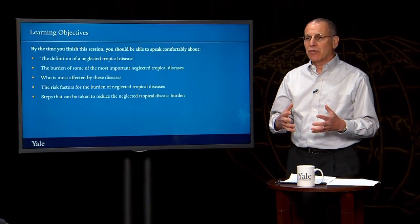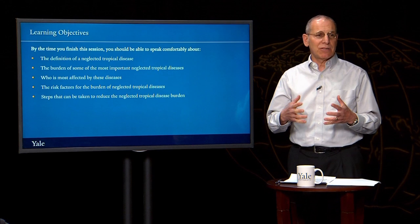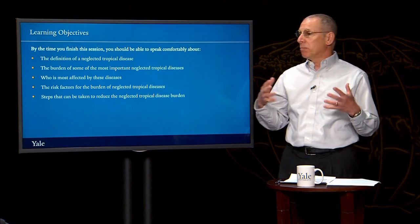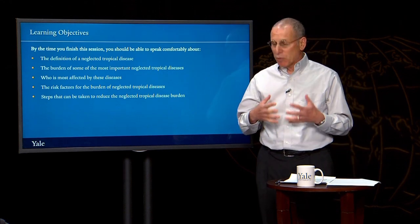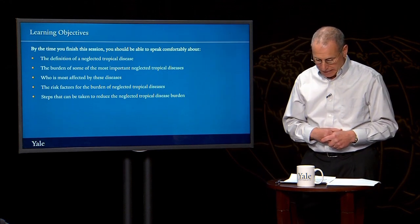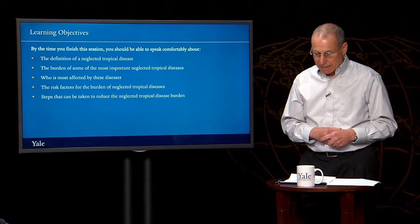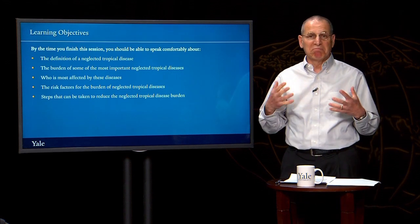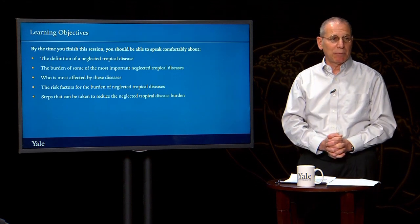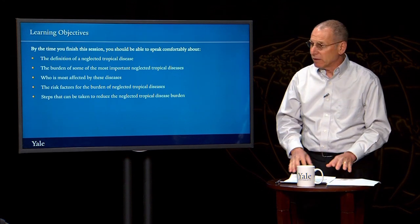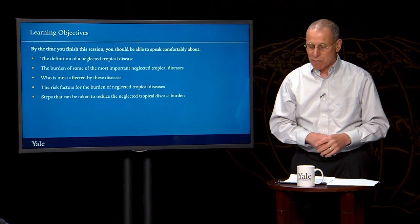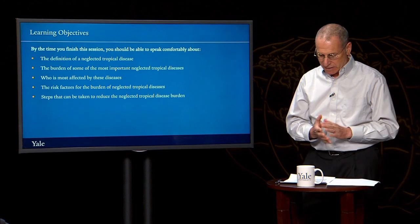And are these usually better off people or less well off people? Less well off people. Some people talk, in fact, about the NTDs affecting the bottom billion — the poorest billion people in the world. And in fact, about one-sixth of the people in the world are infected with one or more of the NTDs.